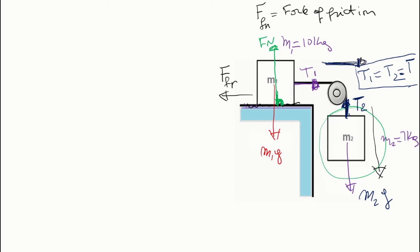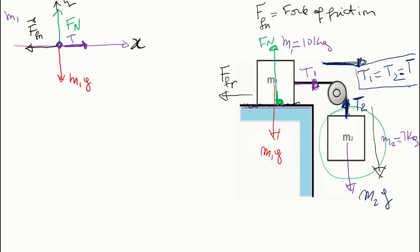The direction of motion for object M1 is eastward and M2 will move downward. Now let's sketch the free body diagrams. For M1, we have M1·G downward, normal force Fn upward, friction force opposing motion, and tension pulling eastward. This is the free body diagram for M1. For object M2, we have M2·G downward and tension T upward. The direction of motion of M2 is downward and M1 is eastward.